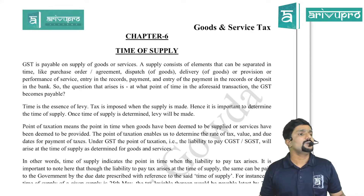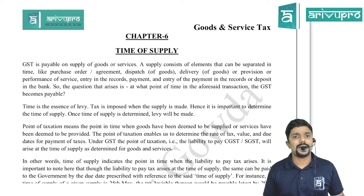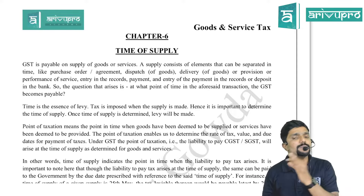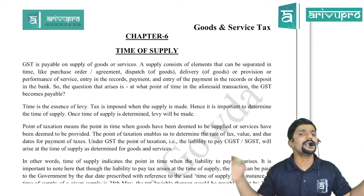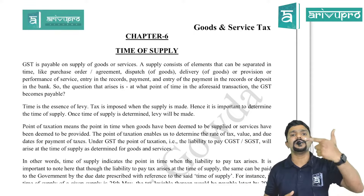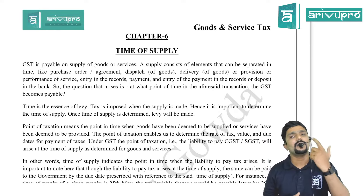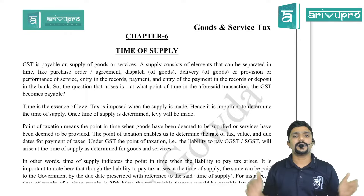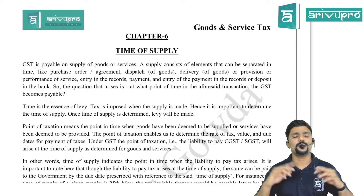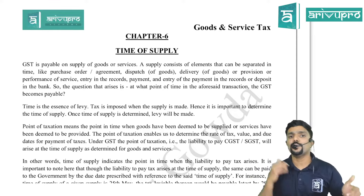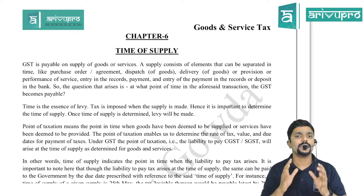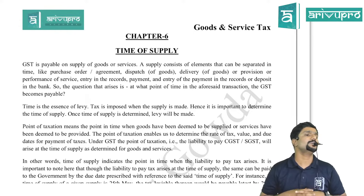In any other case, it will be the supplier under Forward Charge Mechanism. We also have to identify whether the taxable supply is intrastate or interstate. When the location of supplier and place of supply is within the same state or union territory, it is intrastate supply and CGST plus SGST (or UTGST for union territory) would be levied. In any other case — when they are in different states, different union territories, or involve import/export or SEZ — it is interstate supply and IGST would be levied by the central government.